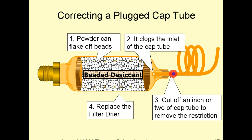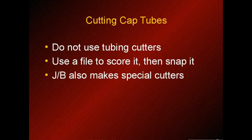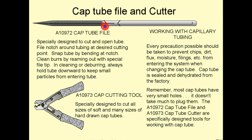When brazing the cap tube back in, make sure you push enough of the tube in so that brazing doesn't plug the small end, but not so far that it's smashed against the screen holding the desiccant. When cutting a cap tube, don't use tubing cutters — they compress the inside diameter and cause issues with pressure drops. Instead, score the cap tube with a file or a cap tube cutting tool, then snap it off by holding it between your thumbs and fingers with both hands.